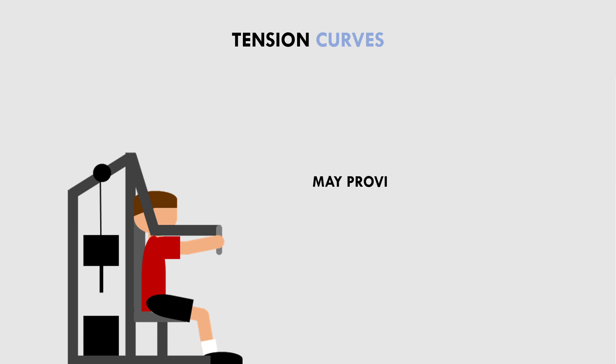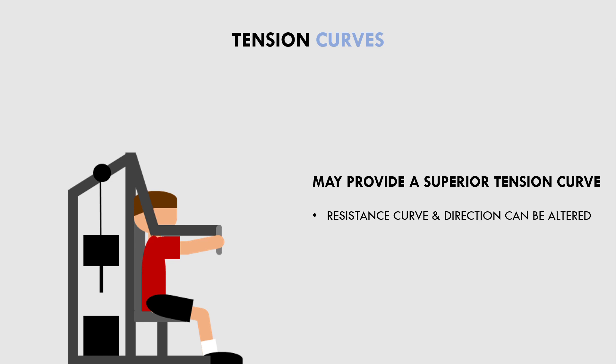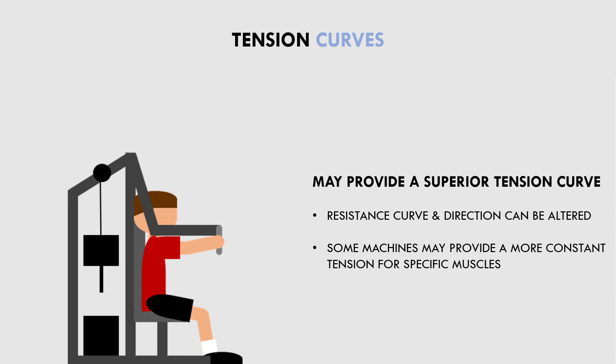Now let's cover what unique benefits machines have over free weights. The first benefit is potentially superior tension curves — the amount of resistance that occurs at different portions throughout the lift. Free weights only provide resistance in a downward direction due to gravity, and this resistance doesn't change. With machines, resistance can be applied in all different directions and can change at different portions of the lift. Machines are often manufactured to match the tension curves of different movements and muscles to provide more constant resistance throughout the entire range. For example, a machine preacher curl provides more constant tension throughout the range of motion compared with a free weight preacher curl, and a pec deck machine provides a more constant tension profile on the pecs compared with a dumbbell fly.